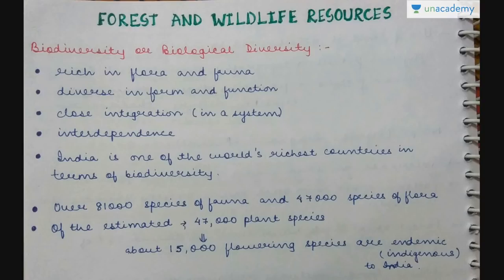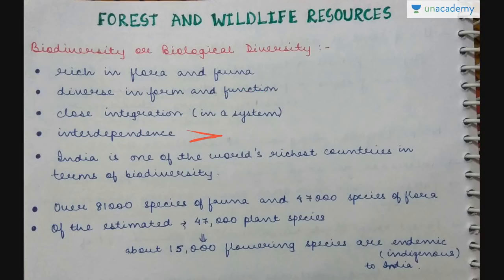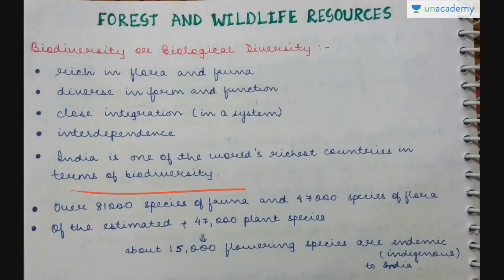Forest and wildlife resources — what's this term basically? Biodiversity or biological diversity: we have richness in different kinds of flora and fauna here. There is diversity in the form and function of these species. There is also close integration or interdependence between different species — no species can live in isolation, they need some other species to survive.